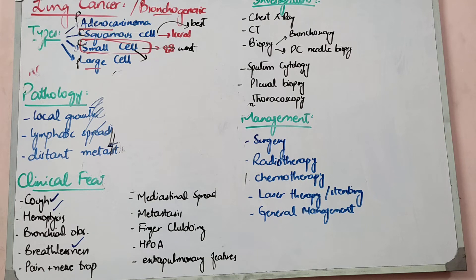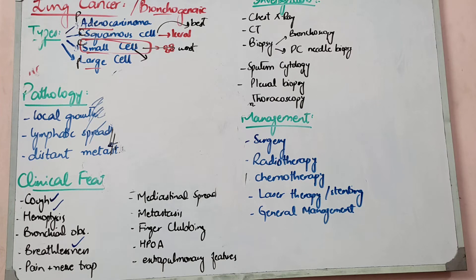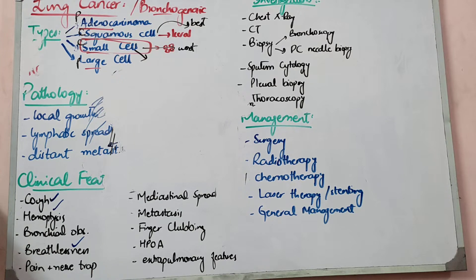Hello everyone. We were talking about lung cancer medicine. This topic is very important — you should be able to do this. I told you about the clinical features, and that Pancoast tumor and Horner syndrome are very important manifestations.